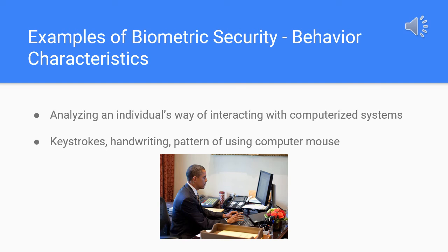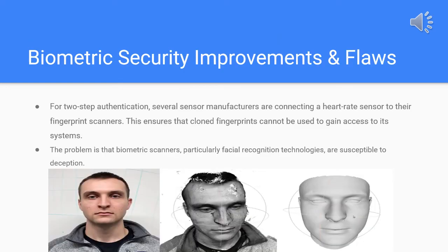The sixth and final biometric security method is behavioral characteristics, which analyzes the way you interact with a computerized system. Keystrokes, handwriting, how you use a mouse, and other movements can assess who you are or how familiar you are with the information you're entering.